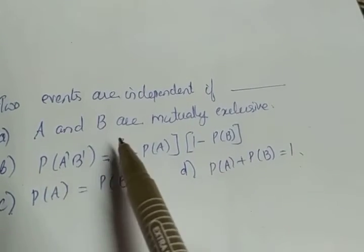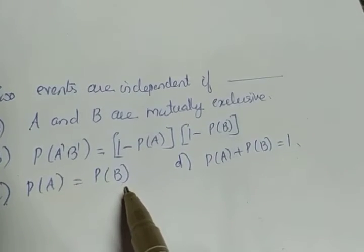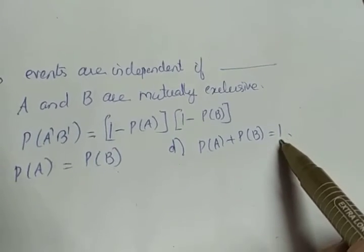The second one, leave the second one. We are moving to the third one. P(A) equal to P(B). That also may not happen for all cases. P(A) plus P(B) equal to 1. That also will not happen.